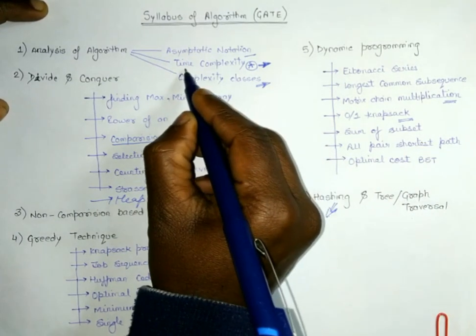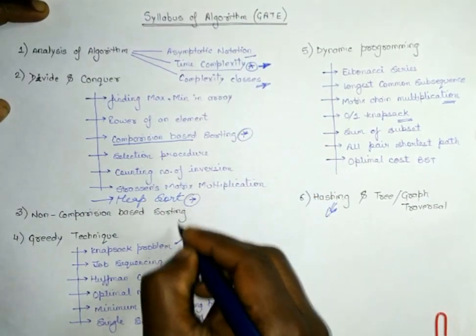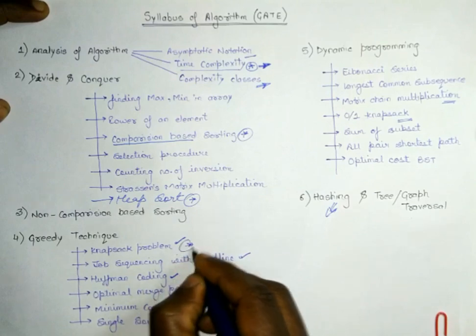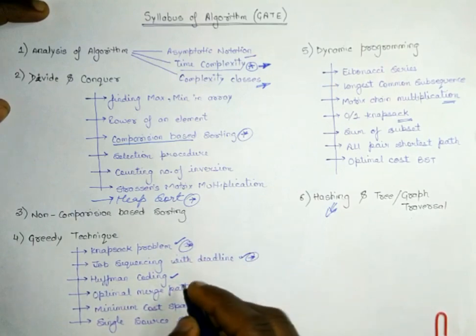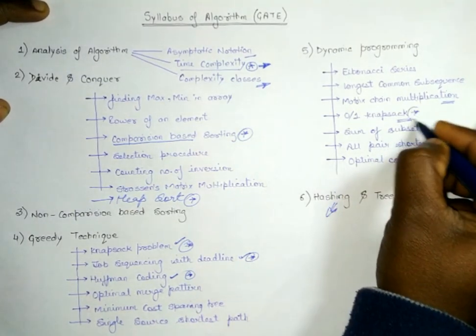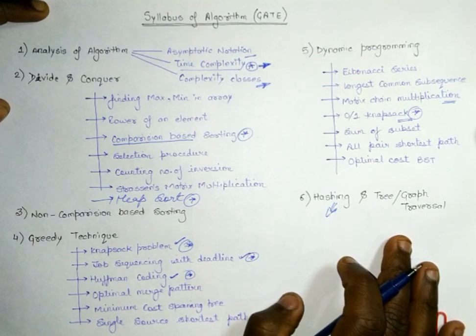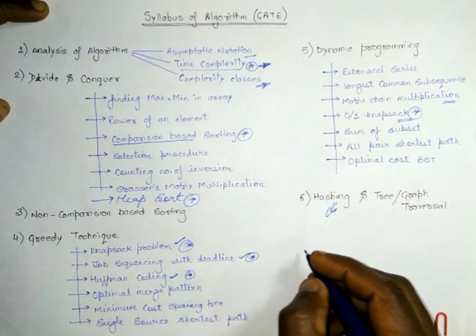What are the most important topics here? One is time complexity, another one is sorting, heap sort for sure, knapsack problem, job sequencing with deadline, Huffman coding, and 0/1 knapsack. These are the most important topics. If you talk about the weightage of this particular subject, the weightage is 7 to 9 marks.